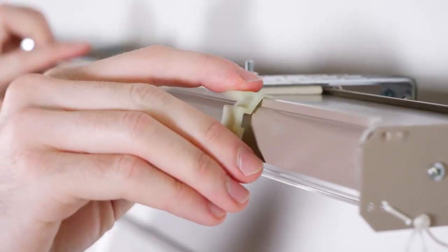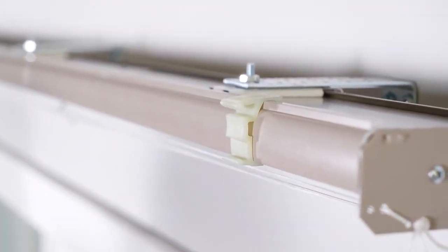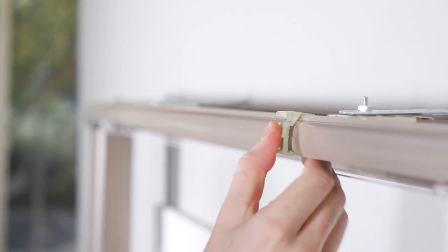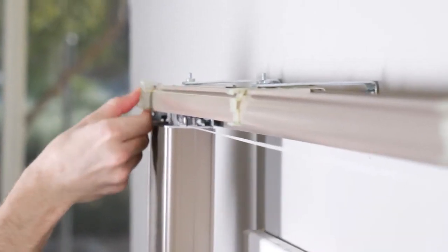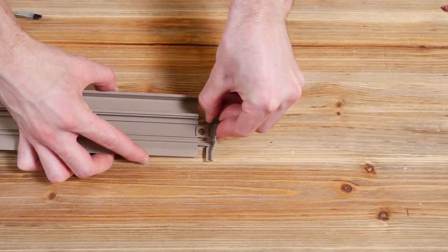Now all that's left are the finishing touches. Attach the valance clips to the headrail as shown here. Make sure they are placed 3 inches in from each side of the rail, and any additional clips are spaced evenly between the outer clips.